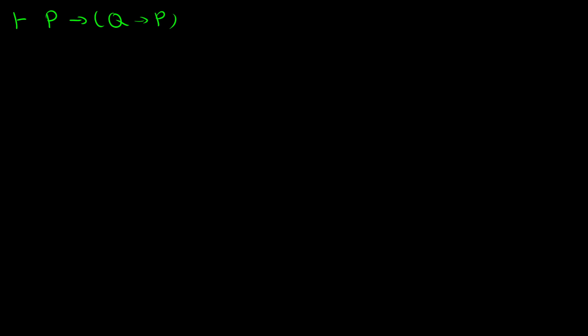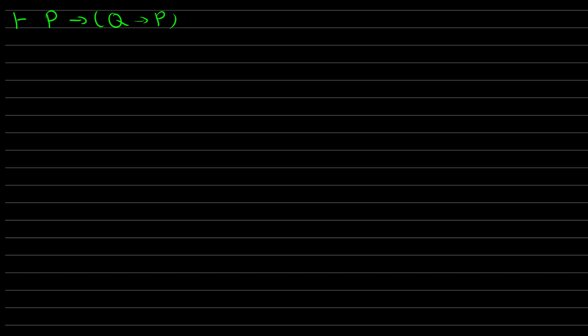So the first one is P→(Q→P). What we're going to start with is an assumption of P, because we need to do if P then Q→P, and then P. So this will be a hypothesis for a conditional proof.